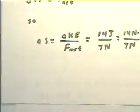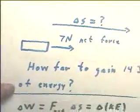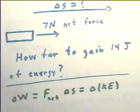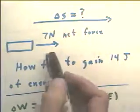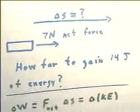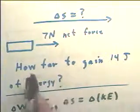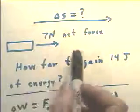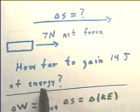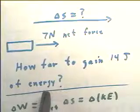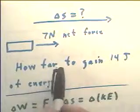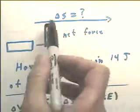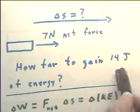Now let's look at a second example. In this case, we have some displacement, delta S, and the displacement is unknown. We know that we have a 7 Newtons net force, and we want to know how far the object has to be pushed to gain 14 joules of energy, presumably, if we follow up on the last example, kinetic energy. So how far do we have to push with a 7 Newtons net force in order for this object to gain 14 joules?